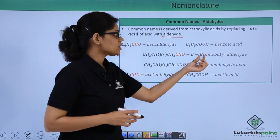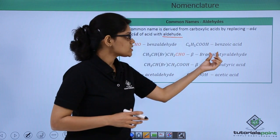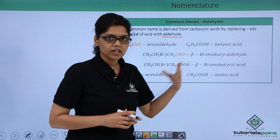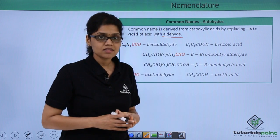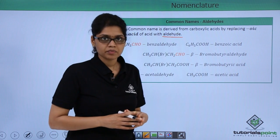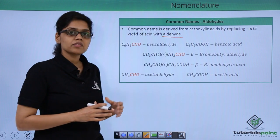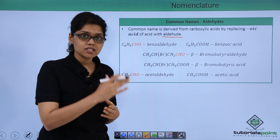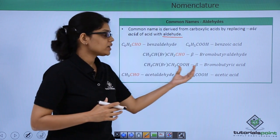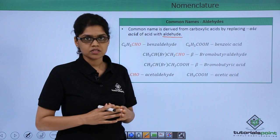Similarly, beta-bromobutyraldehyde is obtained by replacing the '-ic acid' of the corresponding carboxylic acid, which is beta-bromobutyric acid. Another example is acetaldehyde, which is CH3CHO, and the corresponding acid is acetic acid, CH3COOH.